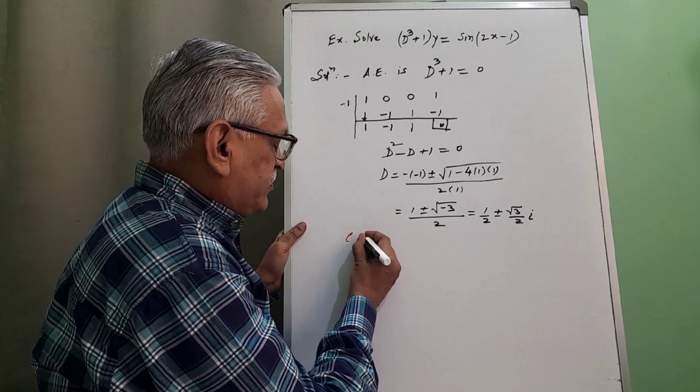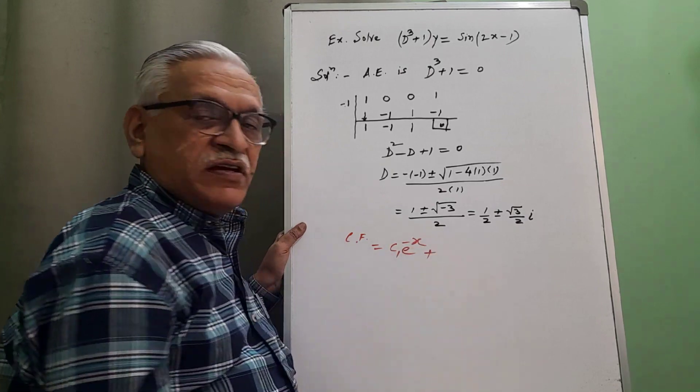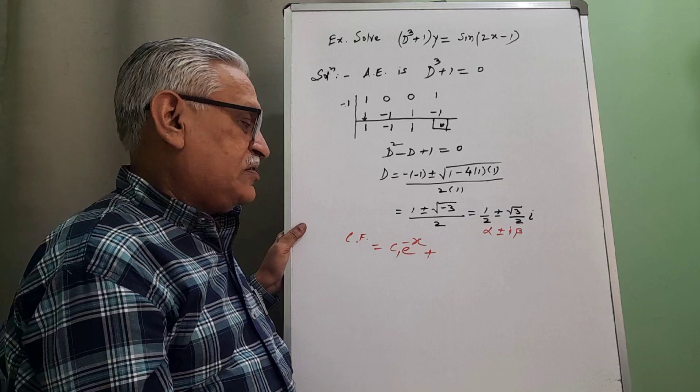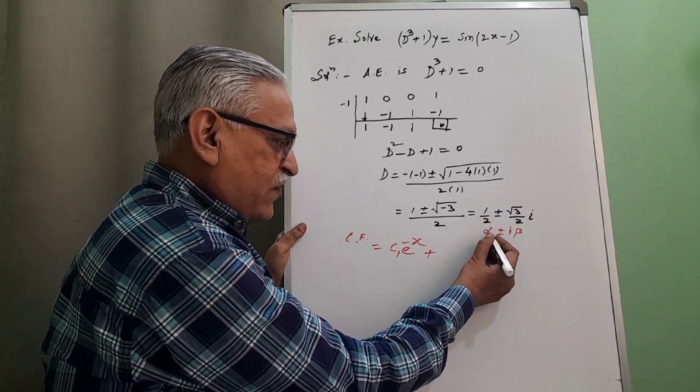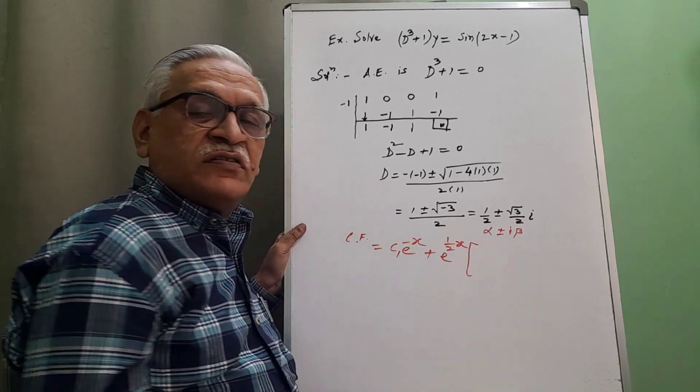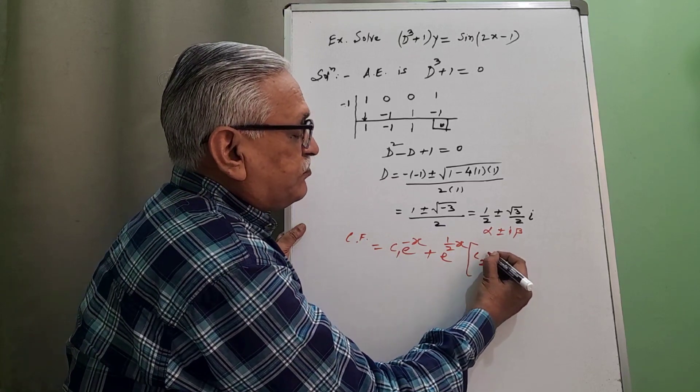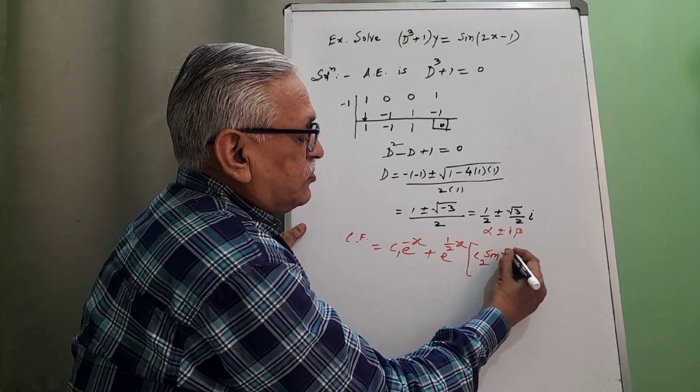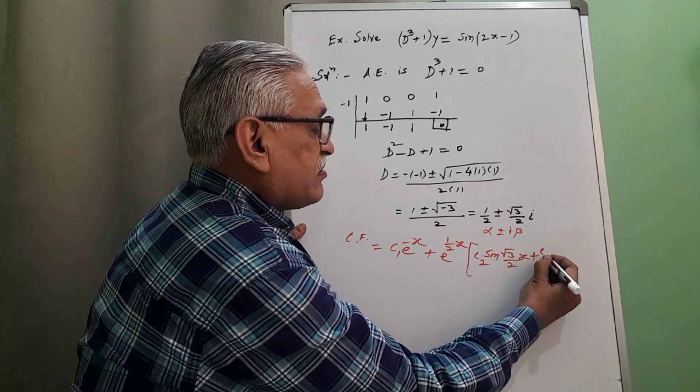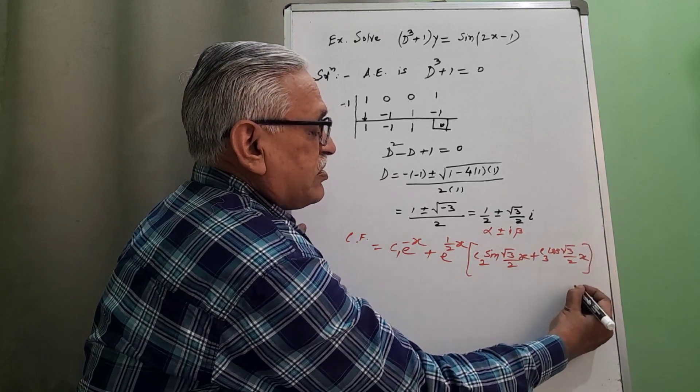And therefore, the complementary function for real is C1 e raised to minus x, and for this alpha plus minus i beta, the way to write down CF is e raised to alpha x. Here alpha is 1/2, therefore e raised to 1/2 times x. C1 cos beta plus C2 sin beta x. Already C1 is used, therefore we take next C2 sin of root 3 by 2 x plus C3 cos of root 3 by 2 x. And we call this equation 1.